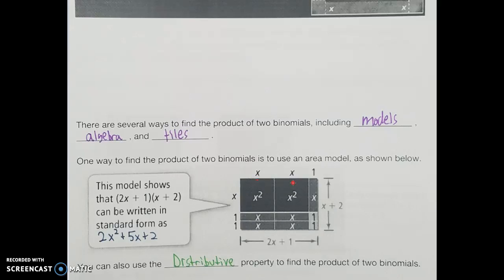If I'm finding the area of each of those tiles, x times x is x squared. We see another x squared, and x times 1 would give you x for an area. When I combine all of these tiles, I have two x squareds, and 1, 2, 3, 4, 5 x's, and 2 left over from doing 1 times 1. So I can rewrite 2x plus 1 times x plus 2 with the area of all those tiles, which is 2x squared plus 5x plus 2.